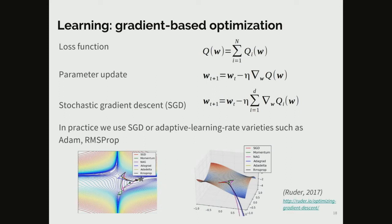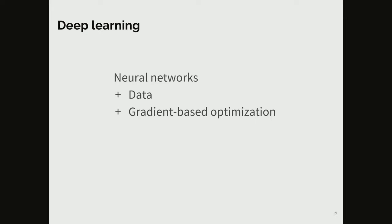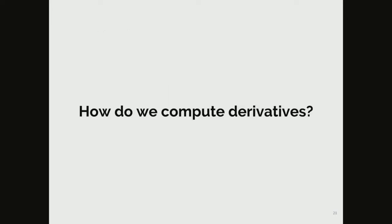Learning is performed by backpropagation to compute the gradient of a task-specific loss value with respect to the learnable parameters of your neural network, then we do stochastic gradient descent or adaptive learning rate algorithms such as Adam and RMSProp. For these we need derivatives. The three most important elements are: neural networks, data, and gradient-based optimization. The rest of the talk is about how we get these derivatives.